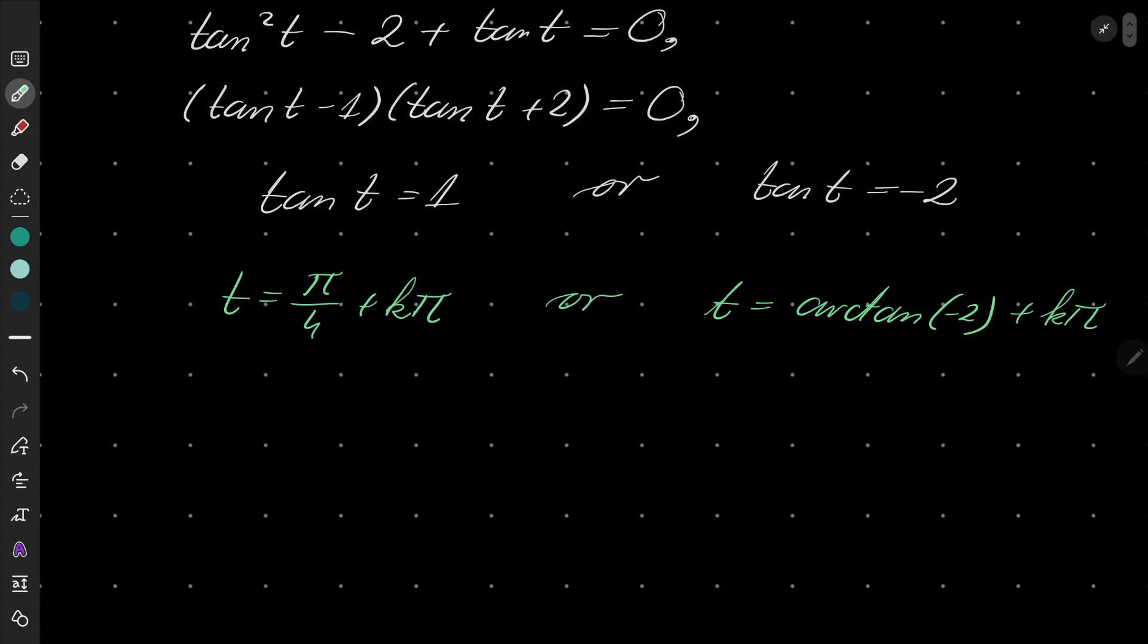Now, arctan(-2): because arctangent is an odd function, we can write it as -arctan(2) + kπ, where k is any integer.